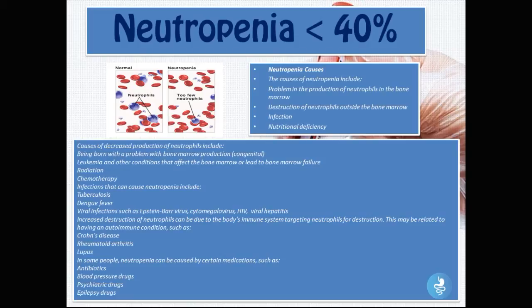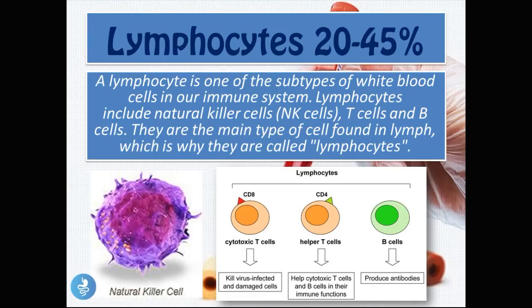Specific causes of decreased neutrophil production include congenital bone marrow conditions, leukemia, bone marrow failure, and radiation or chemotherapy. Infections causing neutropenia include tuberculosis, dengue fever, and viral infections such as Epstein-Barr virus, cytomegalovirus, HIV, and viral hepatitis. Increased destruction of neutrophils can be due to autoimmune conditions such as Crohn's disease, rheumatoid arthritis, and systemic lupus erythematosus. Certain medications — antibiotics, blood pressure drugs, psychiatric drugs, and epilepsy drugs — can also cause neutropenia.